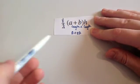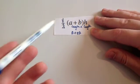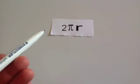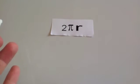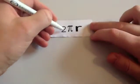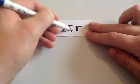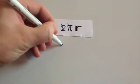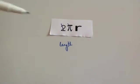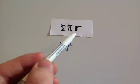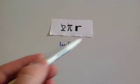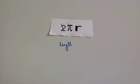Now for 2 pi r: cross off any numbers, so cross off the 2 and cross off pi, since pi is just a number. You're left with r, which is a length. So 2 pi r is a length. And when you think about it, 2 times the radius is a diameter, so it's pi times the diameter — this is the circumference of a circle, which is just a length.